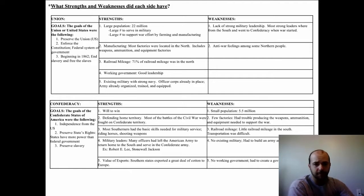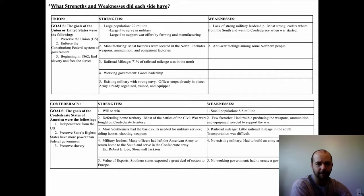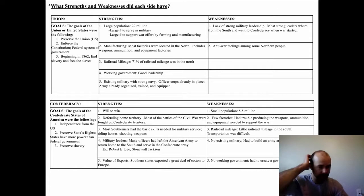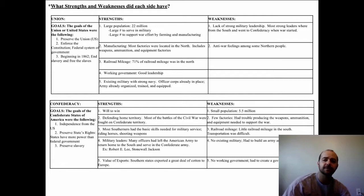The Confederacy's goals were to gain independence from the United States, preserve states' rights — meaning states had more power than the federal government, the opposite of federalism — and also to preserve slavery. So there were opposite goals between the Union and the Confederacy. A critical weakness of the South was their small population and lack of manufacturing. Take a look at the strengths and weaknesses table, pause the video, and read them carefully, keeping them in mind as we go through this unit.